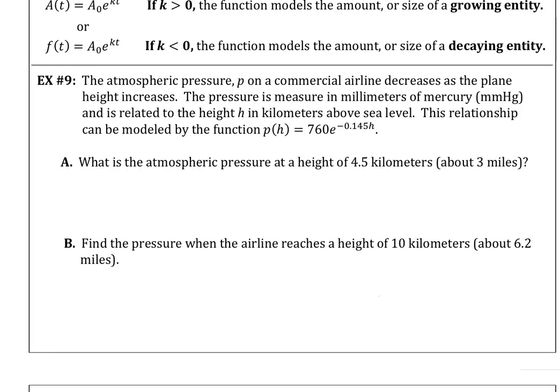Example 9 talks about the atmospheric pressure on a commercial airline. It's decreasing as the plane height increases. The pressure is measured in millimeters of mercury and is related to the height in kilometers above sea level. This relationship can be modeled by the function p(h) = 760e^(-0.145h).